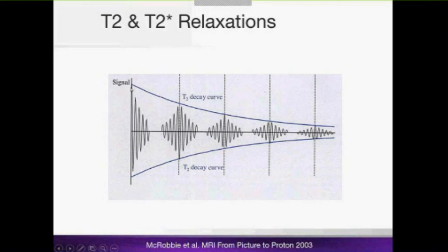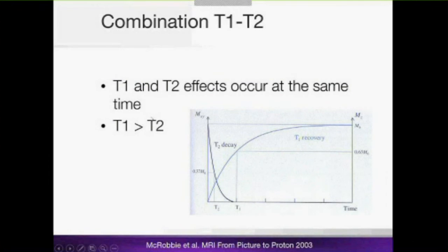The T2-star decay curve is the sum of two contributions: T2 itself and the field inhomogeneities — together producing a very fast initial decay. By applying refocusing 180-degree pulses to generate multiple echoes, as in a spin echo sequence, you can track the slower T2 decay envelope. T1 and T2 relaxation occur simultaneously, but the T2 decay is always much faster than the T1 recovery.